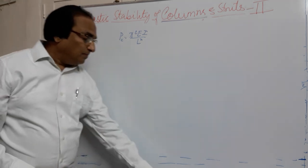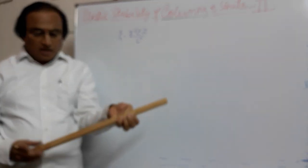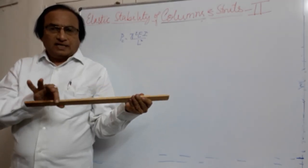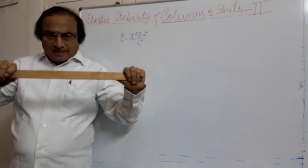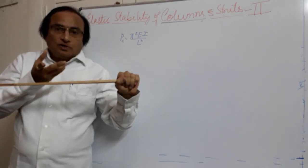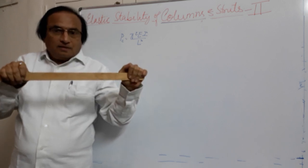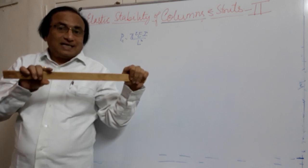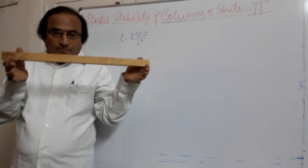Today we will see problems on that. Before that, let's consider a common sense thing. Suppose we have a rectangular cross section B and D. If I ask you to break this member, there are two possibilities: either you will bend it in the short depth direction or in the long depth direction. By common sense, we will try to break the stick in the direction where the depth is less. If I want to use it as a beam, whether it will be supported in the shallow or the deep orientation makes a difference.